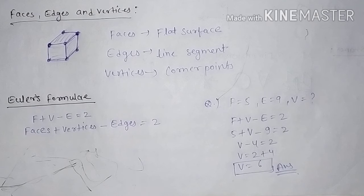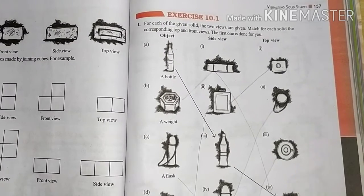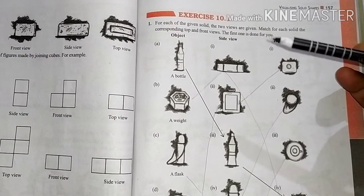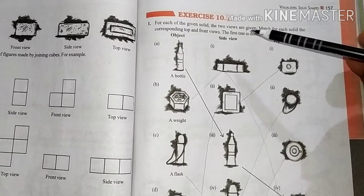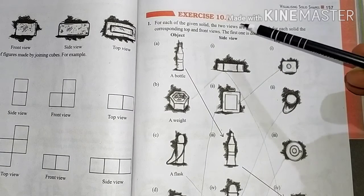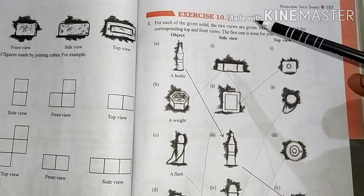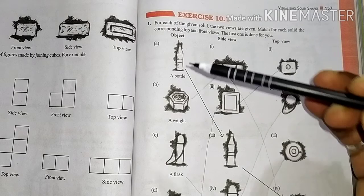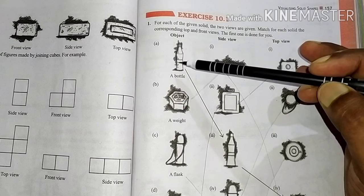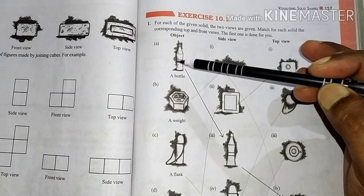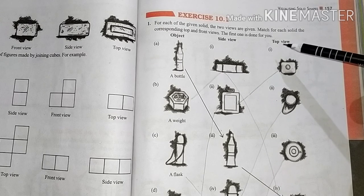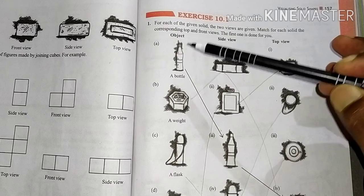This is the complete explanation of the introduction part. In the next part, we will discuss the exercises of this chapter. Now, exercise 10.1, question number 1: for each of the given solids, the two views are given — match each solid to its corresponding top and front views. The first one is done for you.